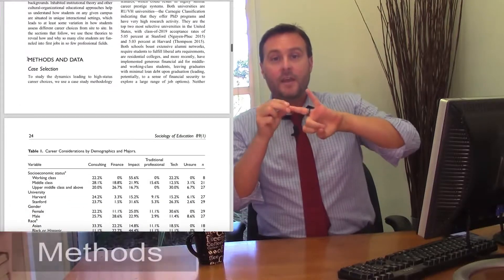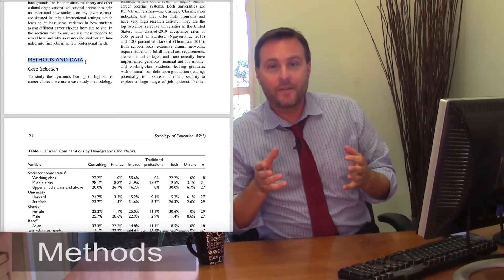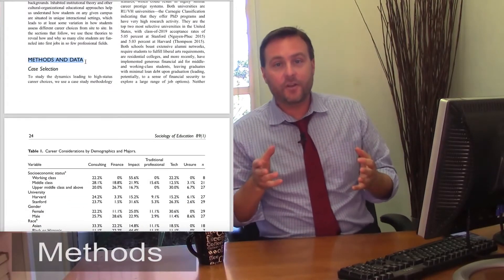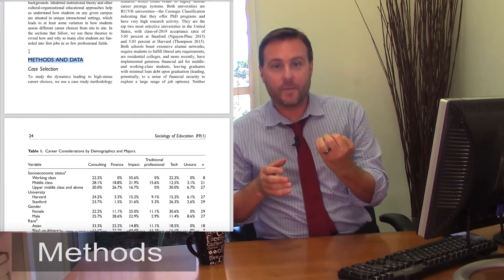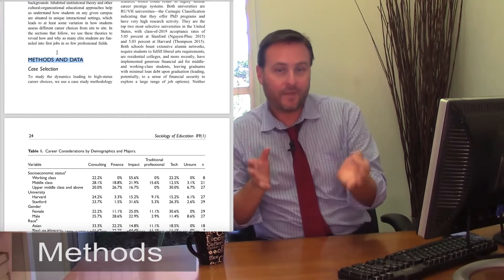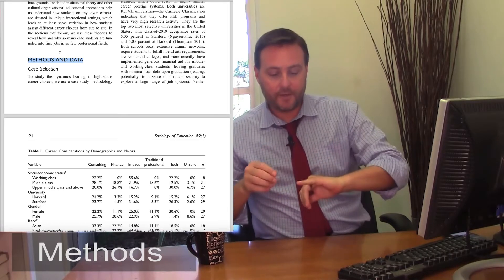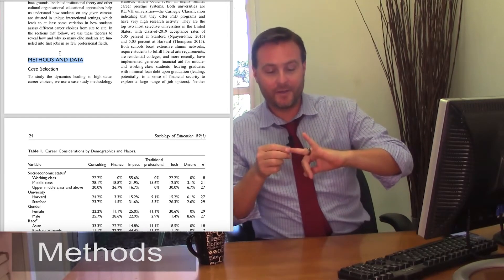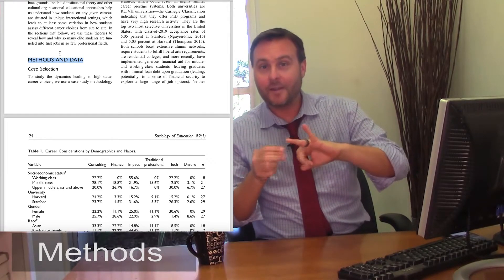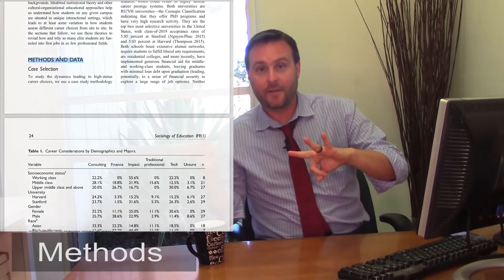Next is the method section. The method section is like a recipe. Have you ever tried to cook something? There are usually three parts to a recipe, and there are kind of three parts to a method section as well. You need your ingredients, your equipment, and the steps you're going to take to make the thing.